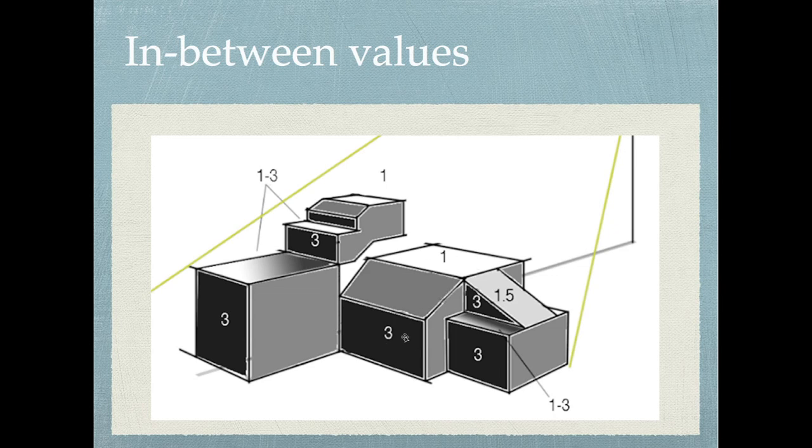Let's go to the shadow side. Here is a one. Here's a three. What's in between a one and a three? Well, you can't pick two because we've already got a two right here. That would be a 2.5. We'll say a dark gray.